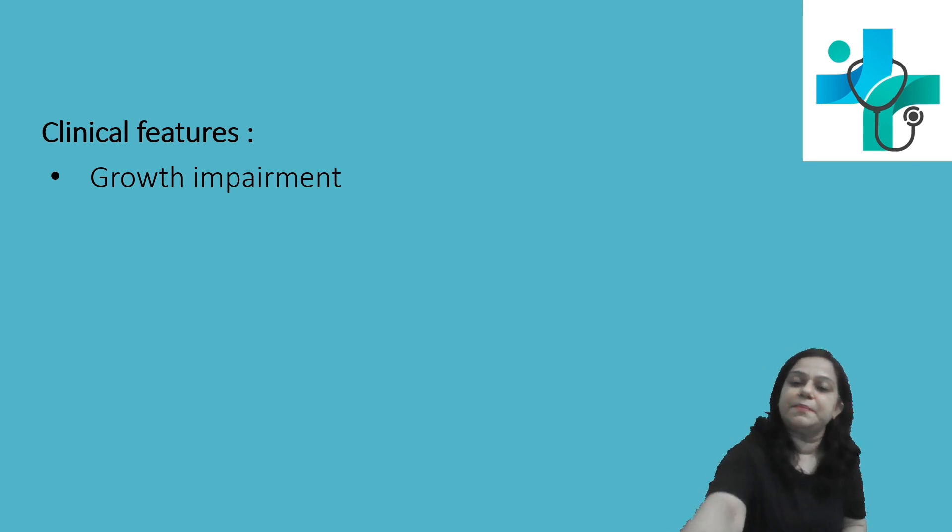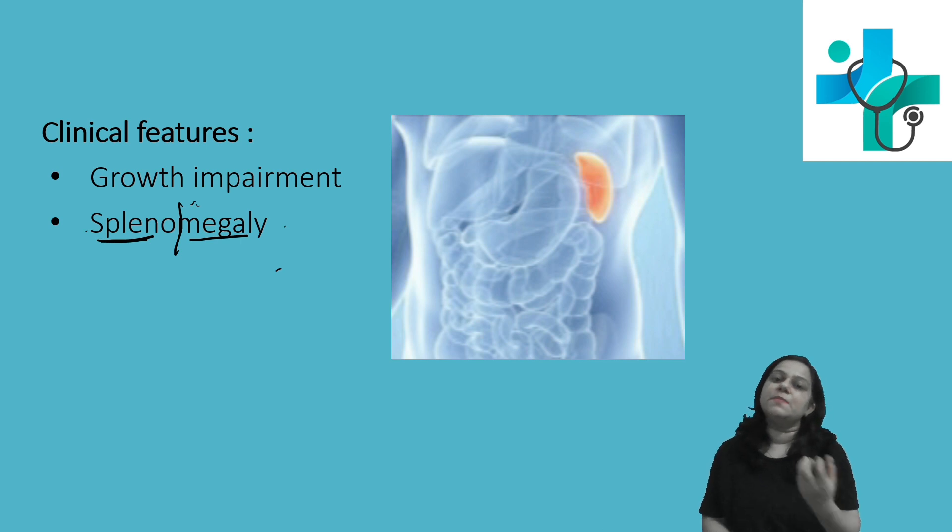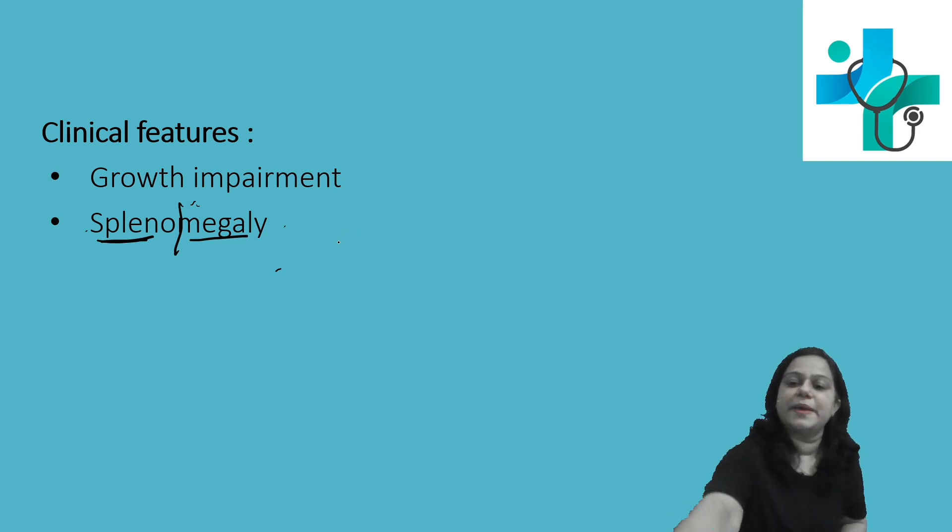Like growth impairment, splenomegaly - understand the word carefully. Splenomegaly, megaly stands for enlargement. Enlargement of spleen. Why is there enlargement of spleen? Because of sickle-shaped RBCs. Spleen is a site where RBCs will be trapped from the circulation, so abnormal RBCs will be trapped from the circulation by spleen. More and more function of the spleen, process of splenomegaly.